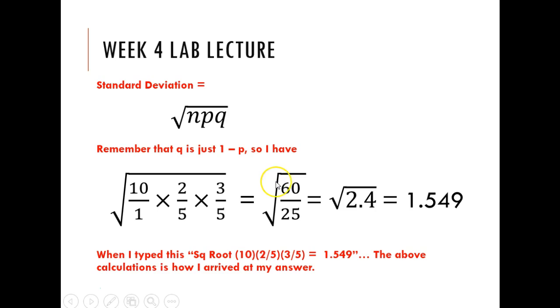Standard deviation. Students often forget to take the square root. That's why I'm making the binomial distribution calculator your best friend, it will help you a lot. I like for students to show how to do it by hand, but you can check your work with that calculator I shared with you for sure. So I would have the square root of 10 times two-fifths times three-fifths, which is the square root of 60 over 25. Square root of 2.4 is 1.549.